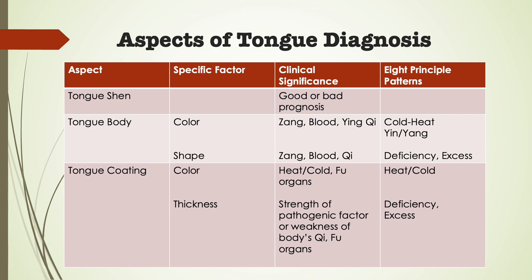The color should always be seen in relation to the shape of the tongue. These two aspects cannot be seen separately and they are the single most important aspect of tongue diagnosis. In cases where you are unsure because of conflicting information, it is the tongue's color that should determine the diagnosis, because the color of the tongue body reflects the long-term influences and the underlying patterns of imbalance.